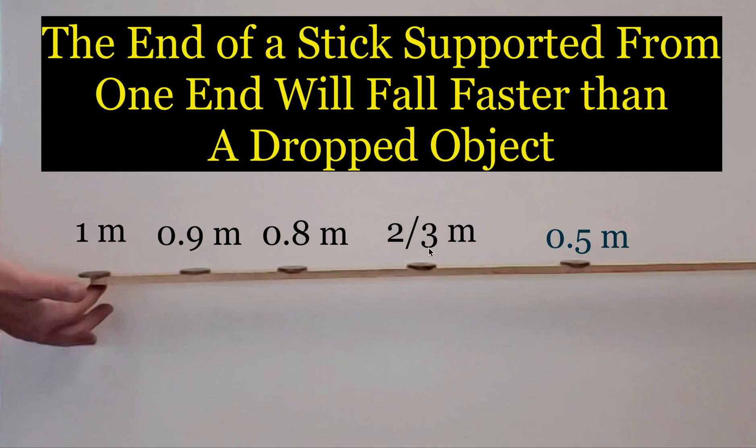Notice what happens to the brass weights that are out further at 0.8 meters, 0.9 meters, and one meter from the very end.